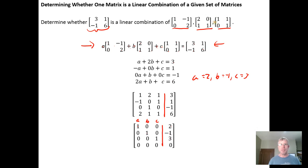By doing 2 times the matrix 1, 0, negative 1, 2